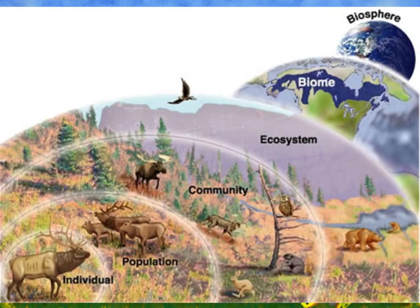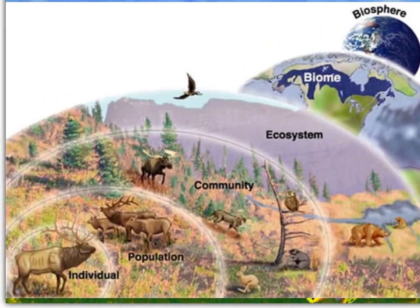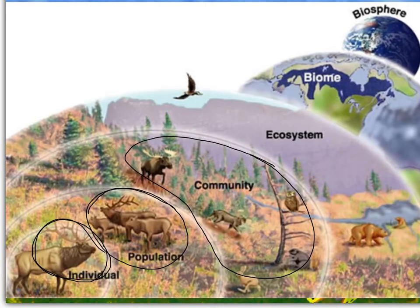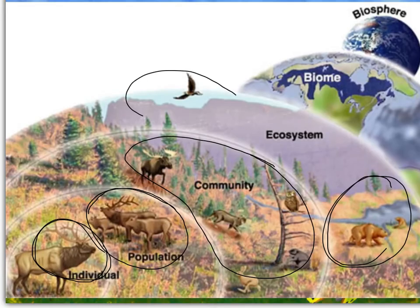To sum up: an individual living thing is an organism. A bunch of the same species is a population. A community is several different species living together in the same space. An ecosystem is the living things and the non-living things interacting — water, air, sunlight. A biome is the same type of ecosystem found in different areas around the world. And the biosphere is the entire portion of the Earth where life exists.